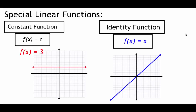A couple of special types of linear functions: one is a constant function, which looks like f of x equals some constant value c. There's no x, meaning the slope is zero. For example, f of x equals 3 gives a flat horizontal line through y equals 3. The next special linear function is the identity function, f of x equals x, where the slope is one — a straight line through the origin with slope of one.